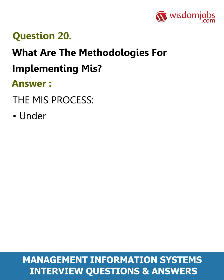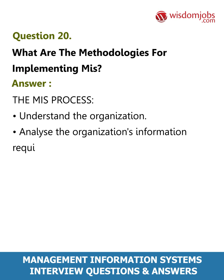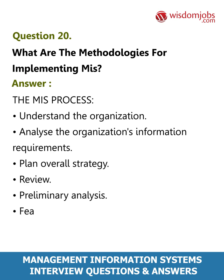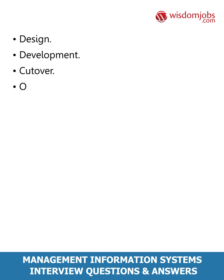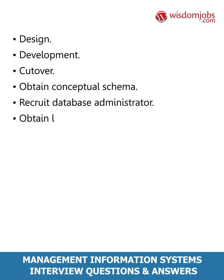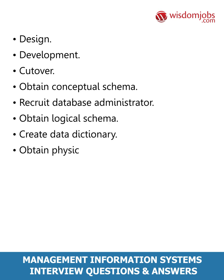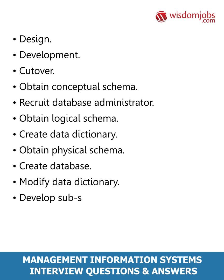Question 20: What are the methodologies for implementing MIS? Answer: The MIS process — understand the organization, analyze the organization's information requirements, plan overall strategy, review preliminary analysis, feasibility assessment, detailed fact finding, analysis, design, development, cutover, obtain conceptual schema, recruit database administrator, obtain logical schema, create data dictionary, obtain physical schema, create database, modify data dictionary, develop sub-schemas, modify database, and amend database.